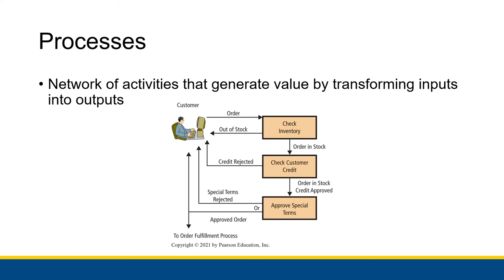If the order is in stock and the credit is approved, there might be some special terms that need to be approved — things like adding on a warranty or shipping. That gets sent to the customer, and if rejected, the order is canceled. If everything is approved, the approved order goes on to the order fulfillment process, where it starts interacting with warehouse stocking and shipping.